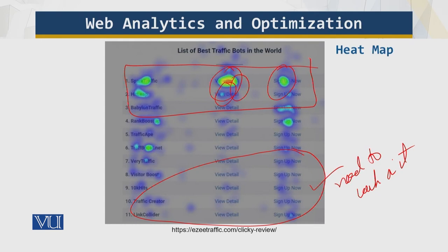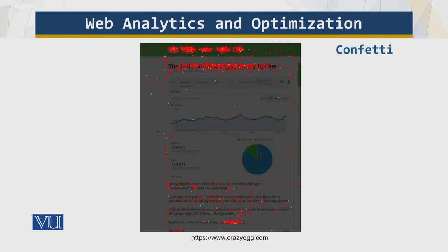I can see where users are clicking and where they are interested. The redness indicates more clicks in that area — this is a heat map. Then we have what is called a confetti view. You can see that one option is generating lots of clicks, but this fancy visualization has hardly any people looking at or clicking on it, so you need to work on it.